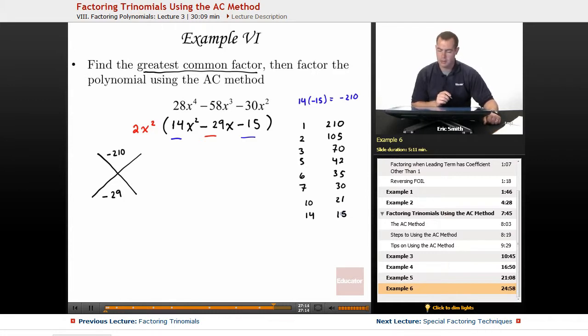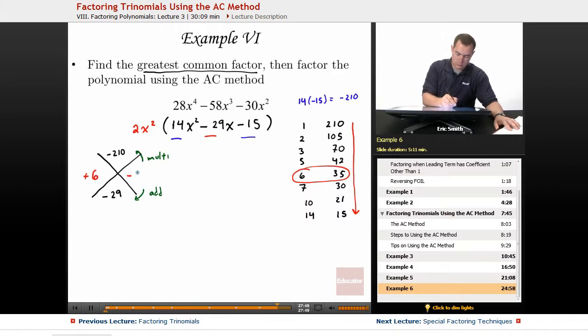Now that I have a list of different numbers, they need to multiply to give us a negative 210. That means one of these numbers will be negative and one of them will be positive. They will add to be a negative 29, so I know the larger number must be a negative. It's the only way we'll get a negative 29 when adding. Comb over the list very carefully. The one that will do it will be this pair right here, the 6 and the 35. Sure enough, those multiply to give us the negative 210, and they add to give us the negative 29. Sometimes you might have to go through really checking these one by one, but it's definitely a worthy process.